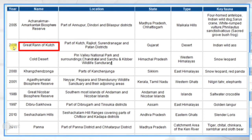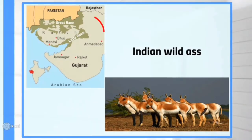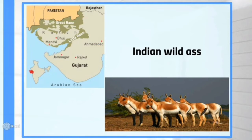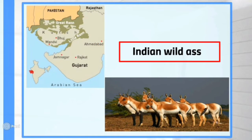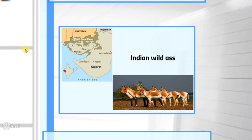Next is Great Rann of Kutch. This is also very important from an exam point of view — questions from here have been asked in almost every exam. It is located in Gujarat. On the map, the light green area shown is the Great Rann of Kutch. The main key fauna found here is the Indian Wild Ass — remember this carefully as it can be asked in your exam.